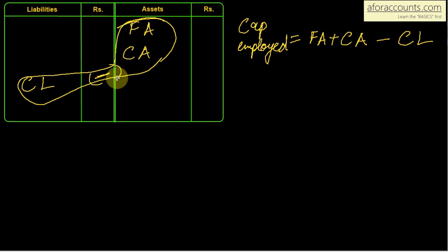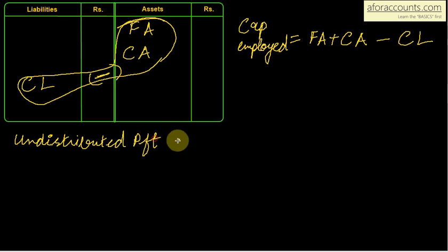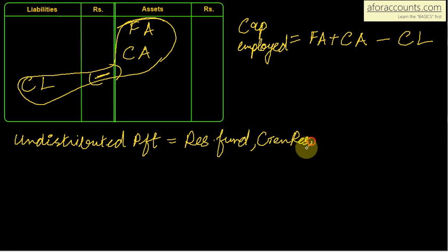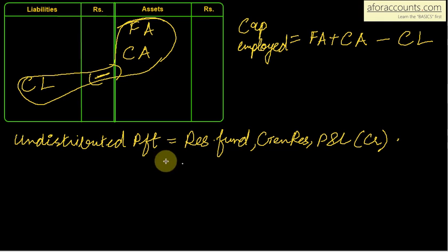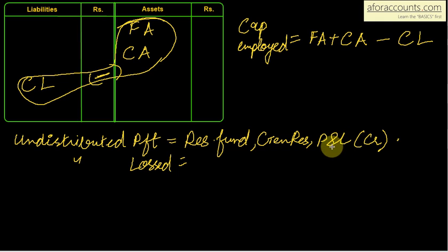Now the third case — capital employed when undistributed profits or undistributed losses are given. Undistributed profits means we have earned but have not yet distributed them. Examples of undistributed profits include: reserve fund, general reserve, and profit and loss account credit balance — these will be found on the liability side. Undistributed losses are represented by the profit and loss account debit balance.